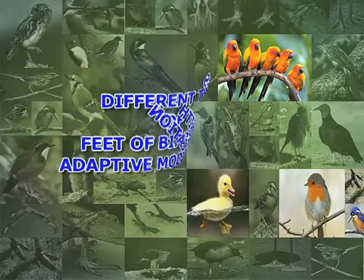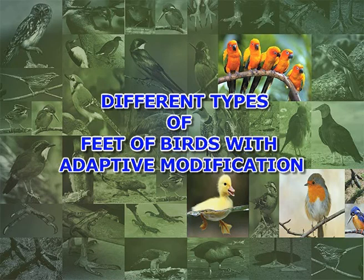Birds are bipedal but evolved from quadrupeds. Balance becomes an important issue with bipedal organisms. To help with balance, most birds have four toes, three of which point forward. The backward-pointing toe is called the hallux. Here we will see different types of feet of birds with adaptive modification.